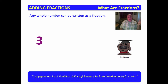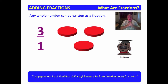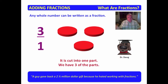Any whole number can be written as a fraction. Consider the number three — three whole units. We can write that as a fraction: three over one. It is cut into one part, and how many of them do we have? We have three of them. What I want you to see is that any whole number can be written as a fraction by placing it over one, because each whole unit is only going to be cut into one part.